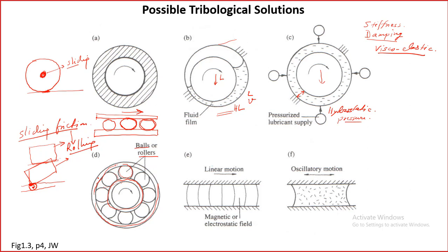This is how we solve tribological problems. Almost all engineering problems involve rolling element bearings because they are so important. That's why there are many design guidelines for selecting rolling element bearings, with load and velocity being the two most critical parameters, followed by temperature.